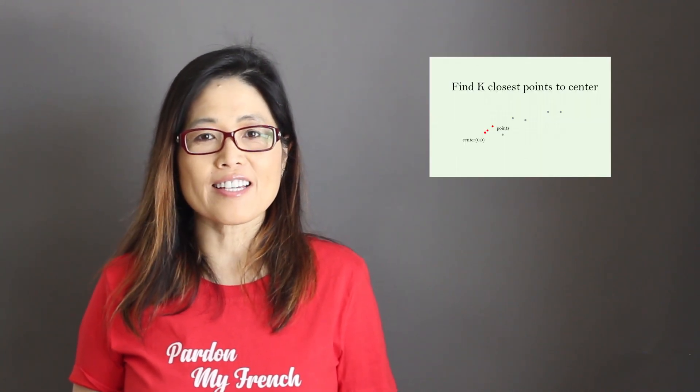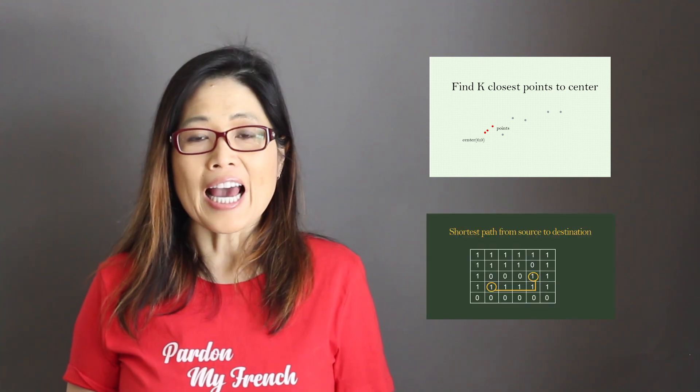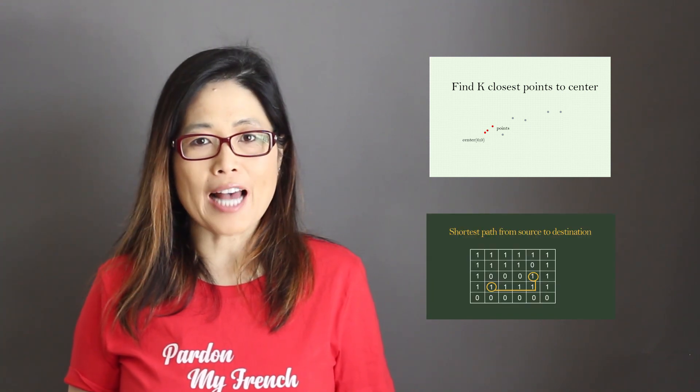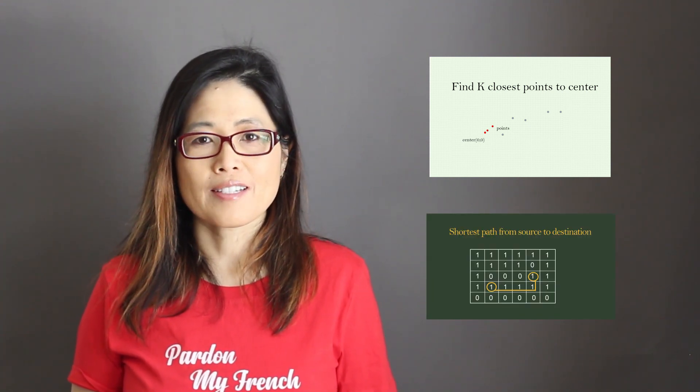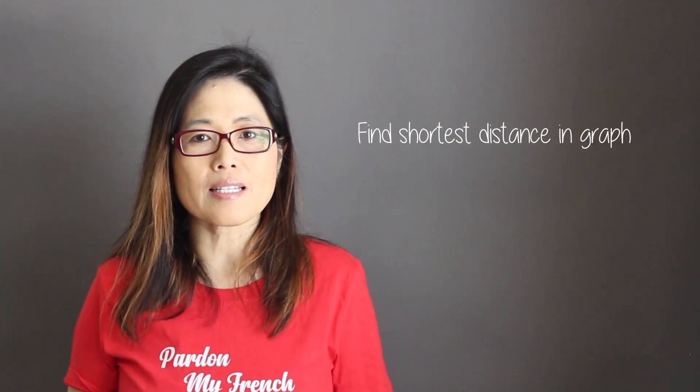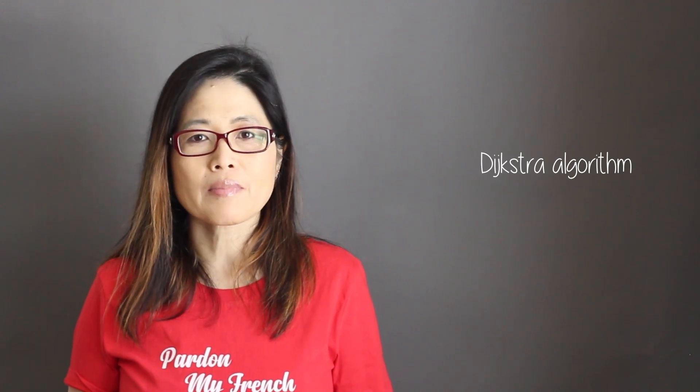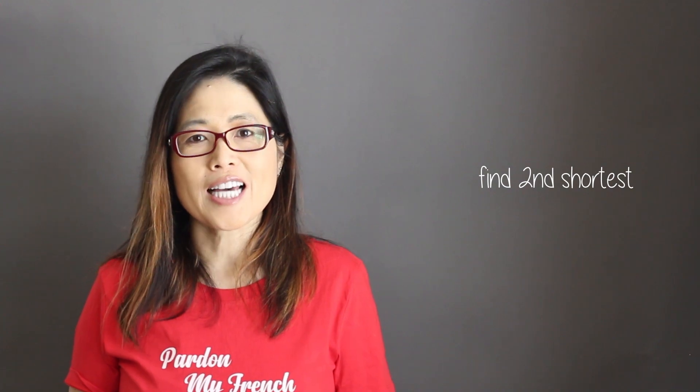In my previous tutorial, I introduced find k closest points to center and find the shortest path between cells in matrix. Today I'm going to have the third and last find shortest tutorial. It is find shortest distance in graph. I will walk through the famous Dijkstra algorithm and use it to solve find second shortest as well.